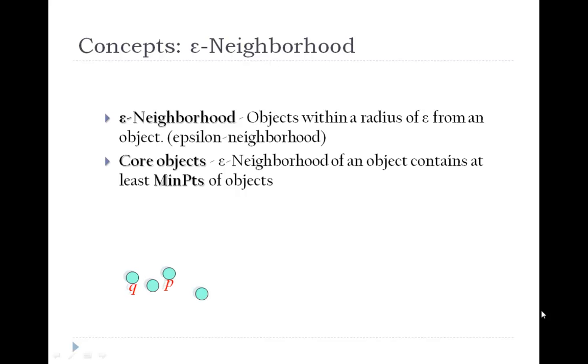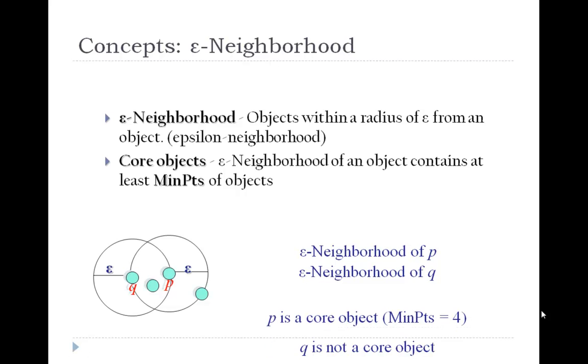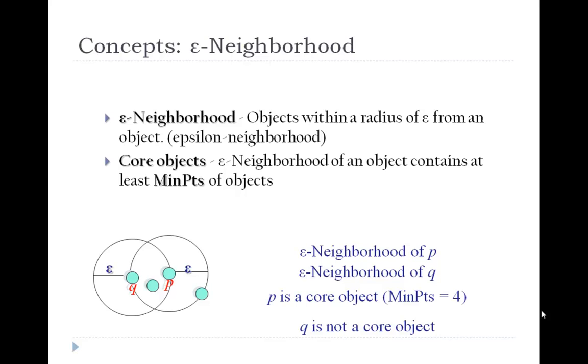Epsilon neighborhood: objects within a radius of epsilon from an object. Core objects: epsilon neighborhood of an object contains at least minimum points of objects.